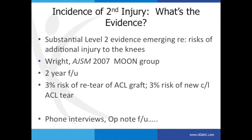In terms of second injury, what's the evidence? We are getting good data. There's substantial level two data emerging. Wright sort of started some of this — one of the first MOON reports to come out. With two-year follow-up, they stated that the risk of re-tear of the graft was 3% and the risk of a new ACL tear on the contralateral side was 3%. However, this was one of the weaker MOON studies — their follow-up was really phone interviews and they weren't examining patients, and they didn't get them all to follow up.